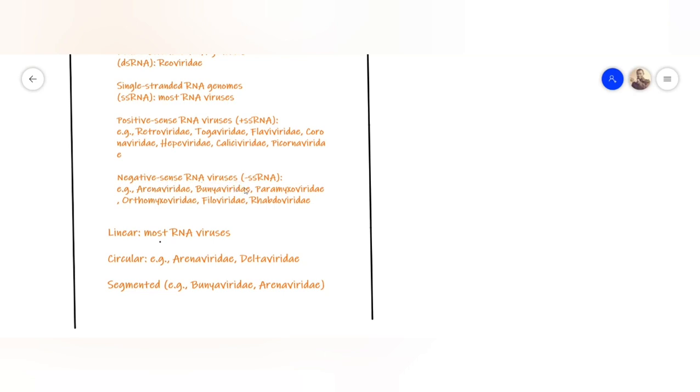Then we have the negative sense RNA viruses. These negative sense RNA viruses cannot be directly translated. They first need to be turned to positive sense and then to proteins. This means they have a specific viral machinery which they bring to the host cell and use to convert to positive sense RNA. We'll explain this in the next videos.